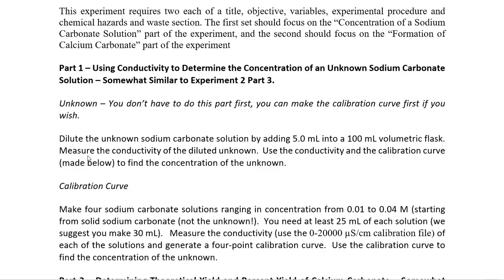The unknown is going to be approximately 0.6 molar, which is too concentrated to measure its conductivity directly. So the first thing you're going to want to do with the unknown is take five milliliters of it using a graduated cylinder and put it into a 100 milliliter volumetric flask. This is a 20-fold dilution, which will bring the conductivity of the unknown onto your calibration curve. Don't forget that because you diluted the unknown 20 times, when you measure its conductivity and use the equation of the line to find its concentration, you'll need to multiply that by 20 to find the concentration of the actual unknown.